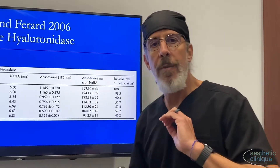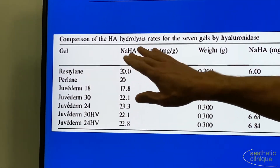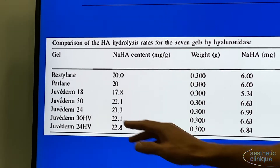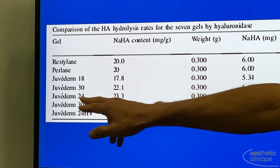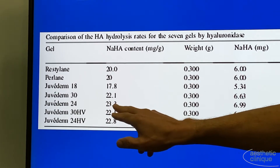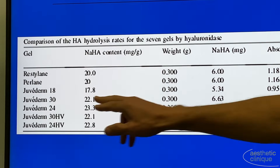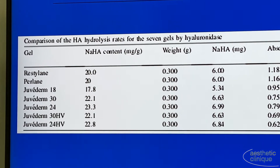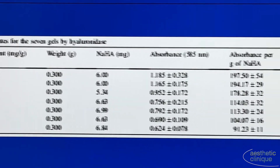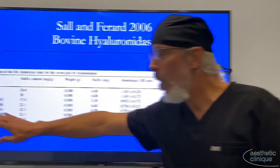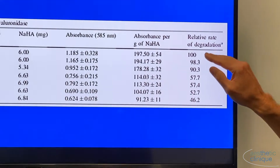Using bovine hyaluronidase against Restylane and Juvederm products: Restylane products are 20 mg/cc, while Juvederm products go up to approximately 23.3 mg/cc. Interestingly, Juvederm — even with a lower HA content — was harder to dissolve than Perlane and Restylane, which had a higher HA content. Juvederm 24, commonly used in the US, was about 50% harder to dissolve relative to Restylane and Perlane.